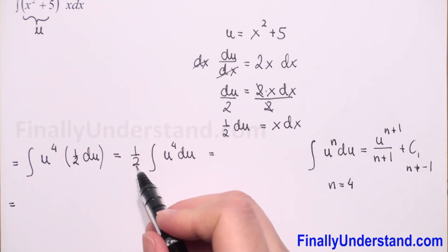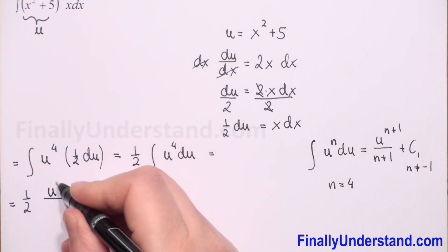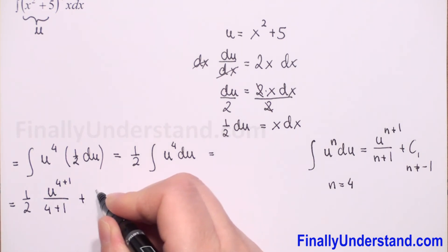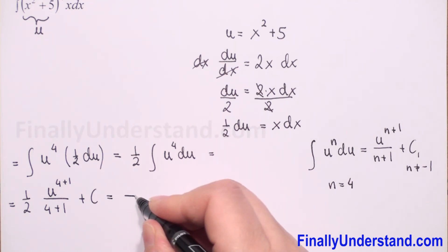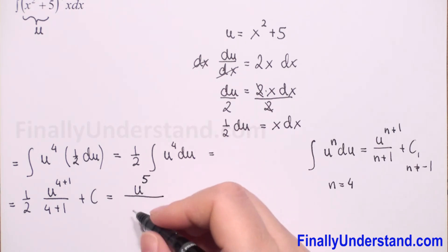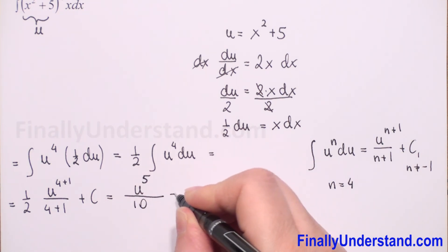And we have in the numerator u to the power 4 plus 1 over 4 plus 1, of course plus C. So this is equal, we have u to the power 5 in the numerator, and the denominator is 2 times 5 is 10, plus C.